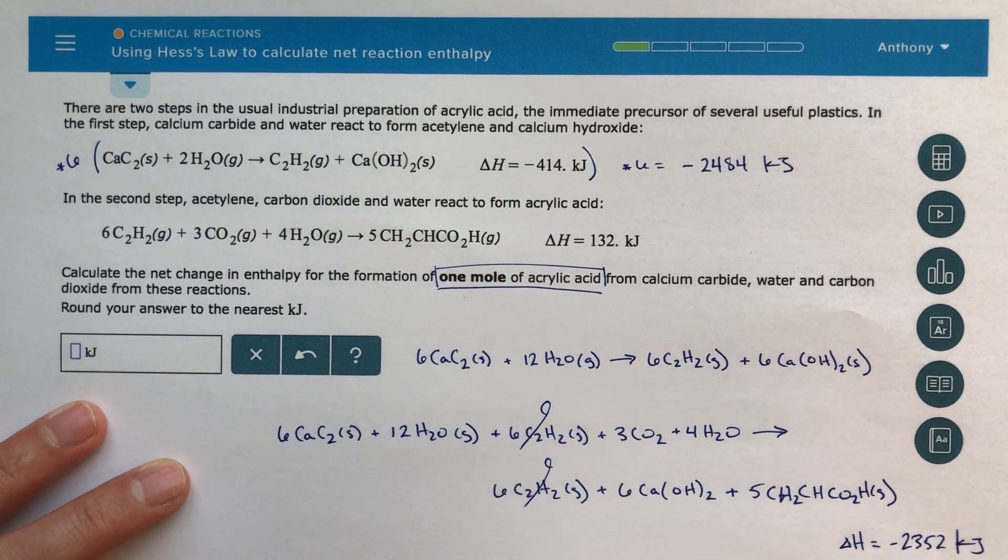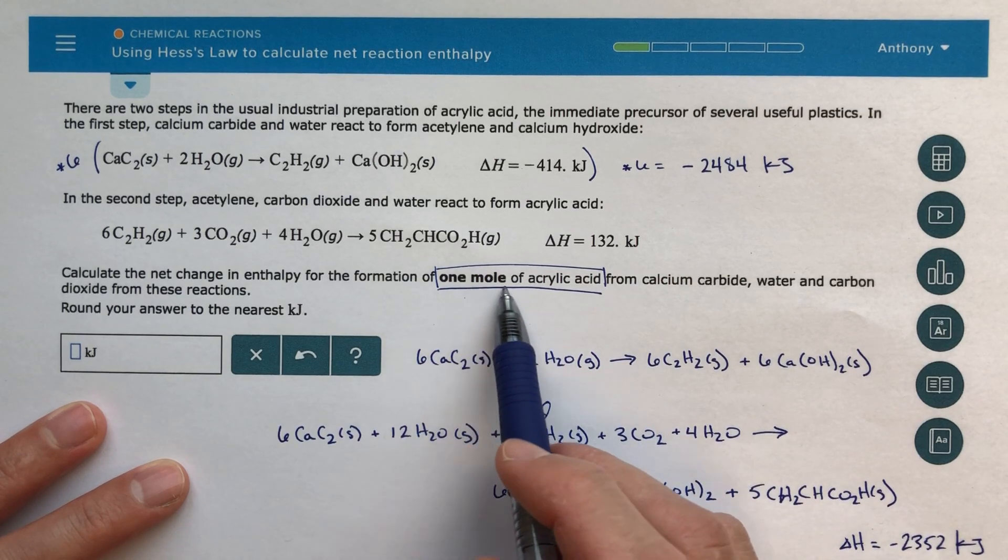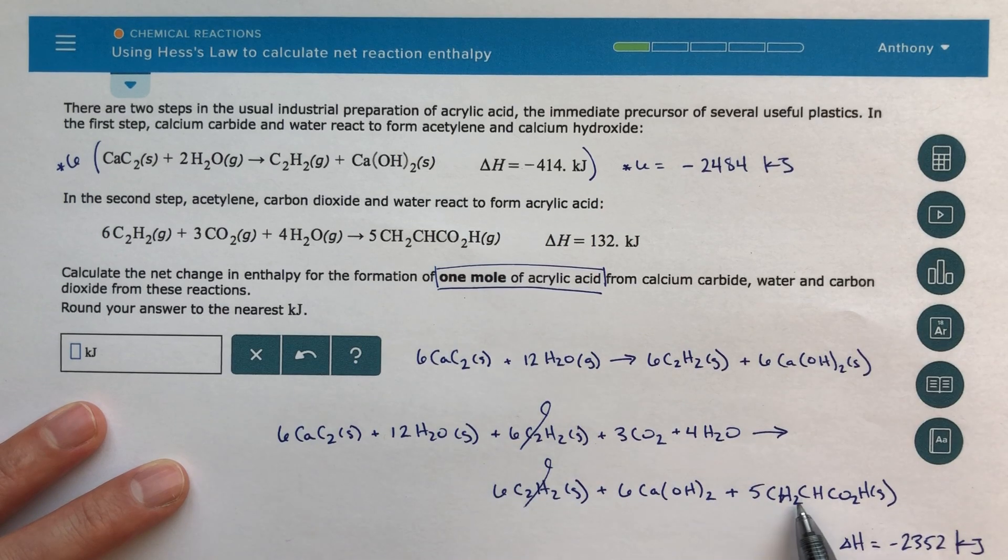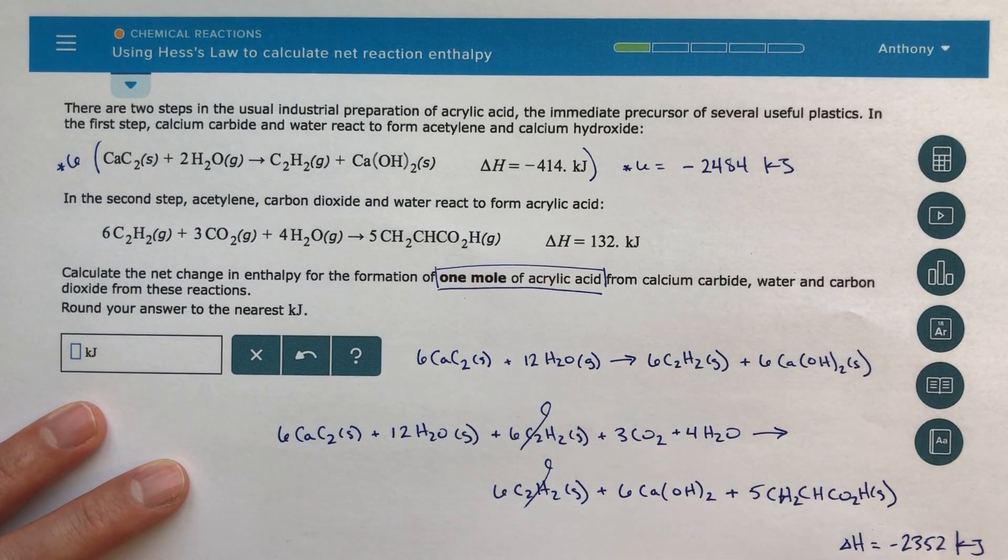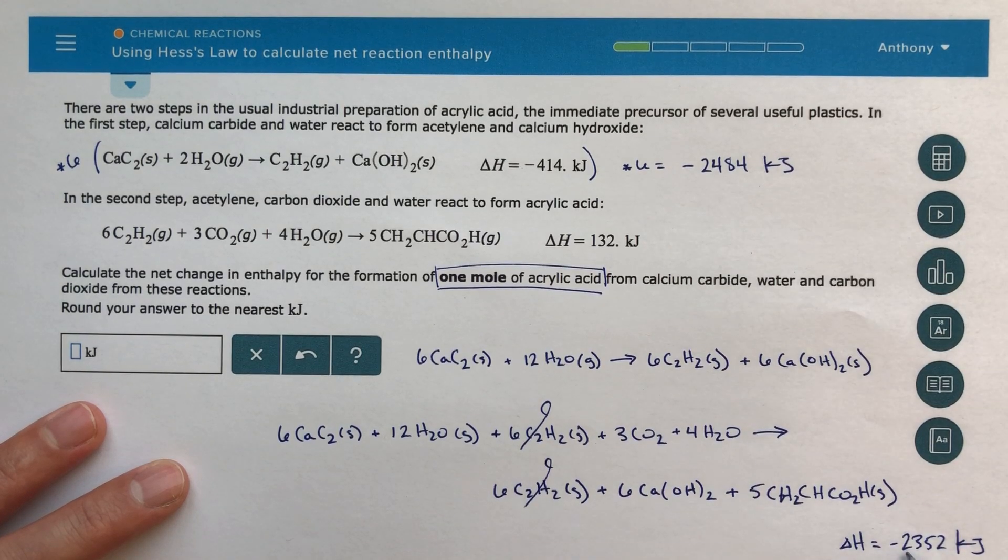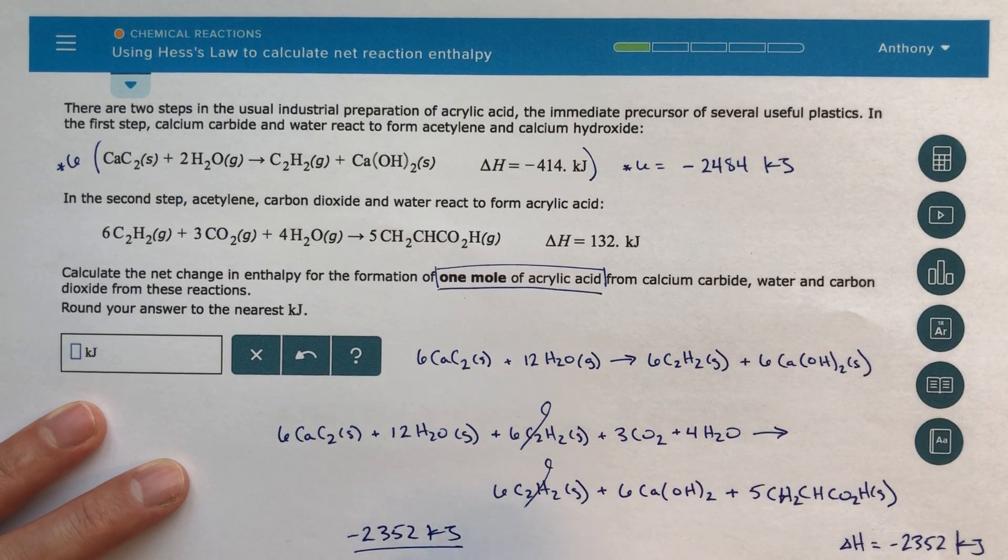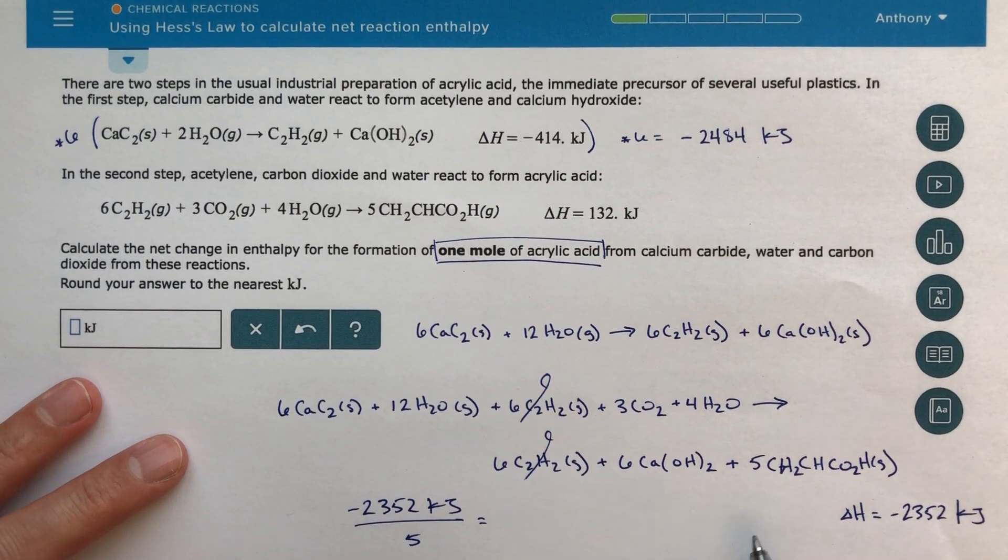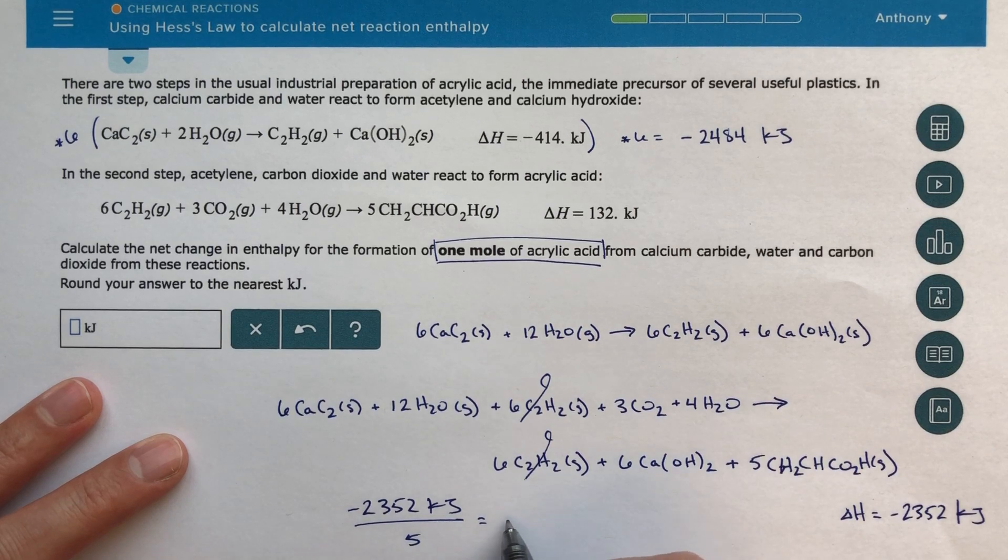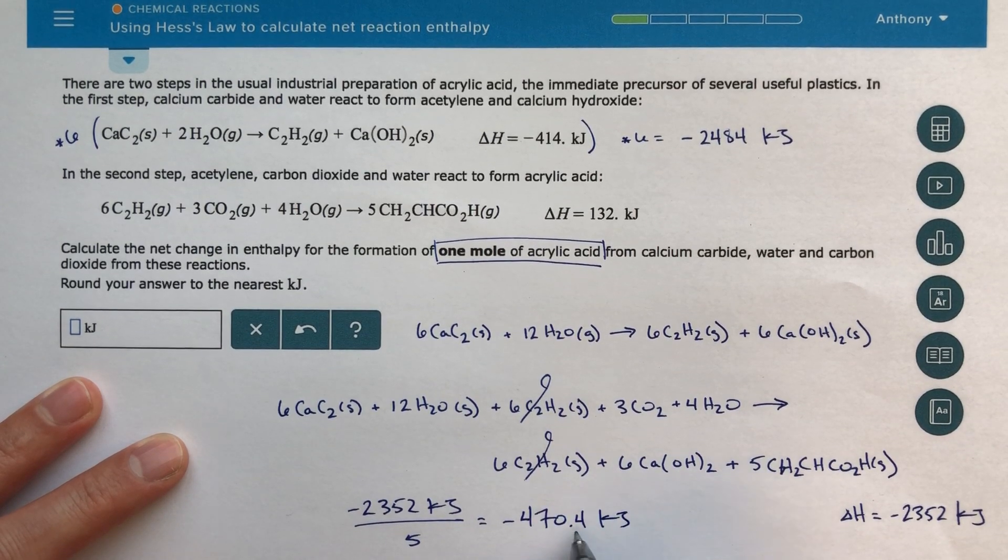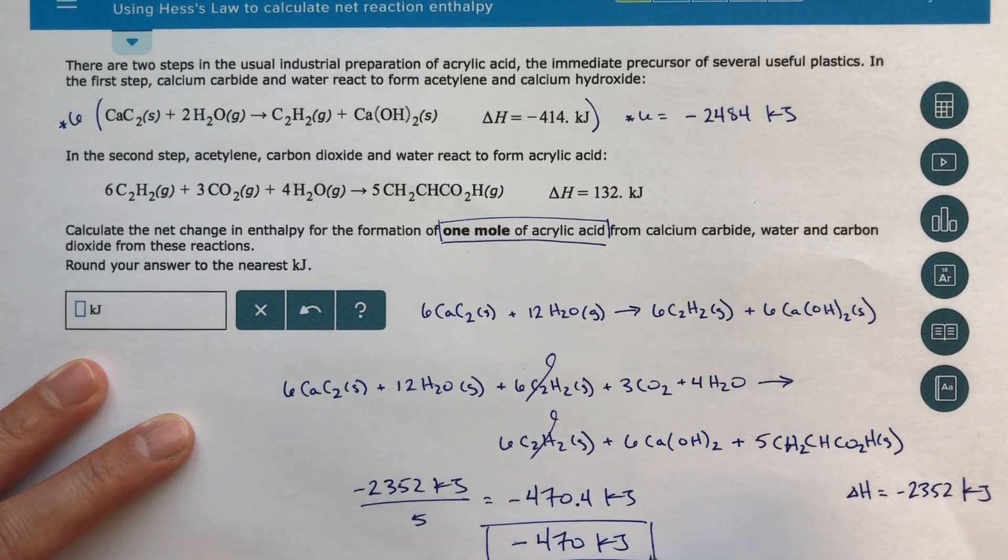Now, we could go through and we could cancel out our intermediates, right? So we've got an intermediate there. And now the question is, well, I only want to know what the delta H for one mole of acrylic acid is. And here my reaction has five moles of acrylic acid. So to get from five moles to one mole, I'm going to divide everything by five. So basically I'm going to divide this whole reaction by five, divide my delta H by five. So minus 2352 divided by five. And let's write it out, minus 2352 kilojoules divided by five. And again, the reason I'm dividing by five is because this delta H is for the formation of five moles. I only want the formation for one mole. And then the answer I got is minus 470.4 kilojoules. So it says round to the nearest kilojoule. So we're going to round that to minus 470 kilojoules. And that is our final answer.